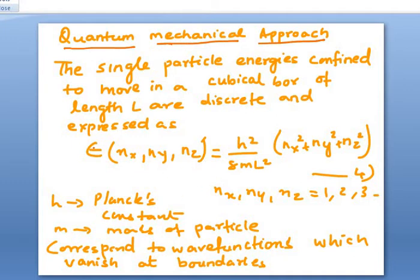Which is given by ε(nx,ny,nz) = (ℏ²/8mL²)(nx² + ny² + nz²). For nx, ny, nz, they have values 1, 2, 3. h is the Planck's constant, m is the mass of the particles. These correspond to wave functions which vanish at the boundaries. So they are free particle solutions, and ψ = 0 at the boundary.